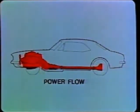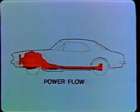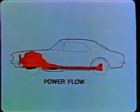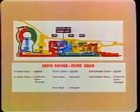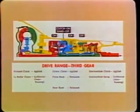The film strip you're about to see will continue to explain the power flow of the 400 Hydramatic transmission. During the last film strip you saw how the power flow from the engine passed through the converter to the splines of the turbine shaft to the front clutch housing. During this film strip, the transmission power flow will be explained in all forward gear positions. Power flow in neutral and reverse will also be explained.